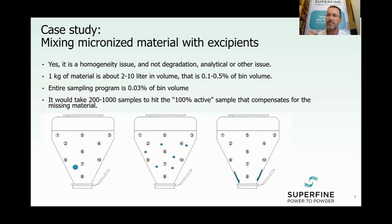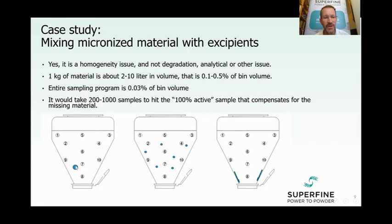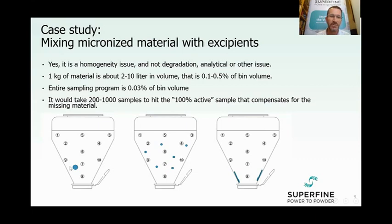Do you know the game 'Battleship' — where you have a drawing of submarines on paper and you try to guess where the enemy submarines are? This is exactly what we are doing here. We're trying to find the one kilogram that accounts for the missing content uniformity, but it's very difficult to find it. Statistically, I would need between 200 to 1000 samples to hit this lump statistically.